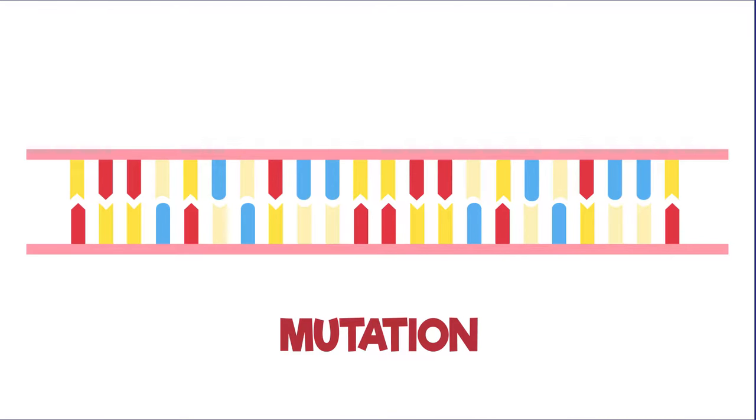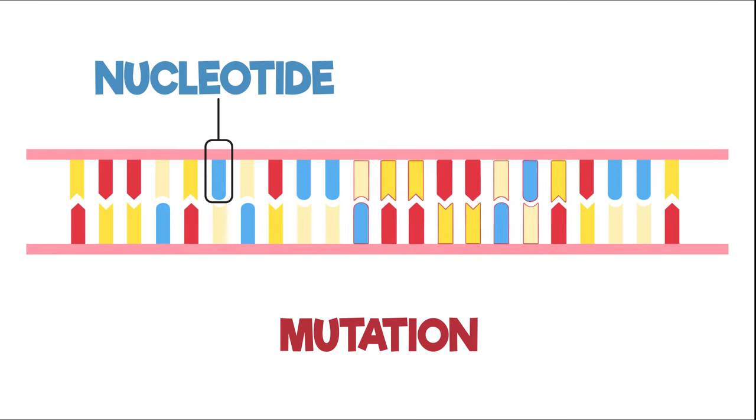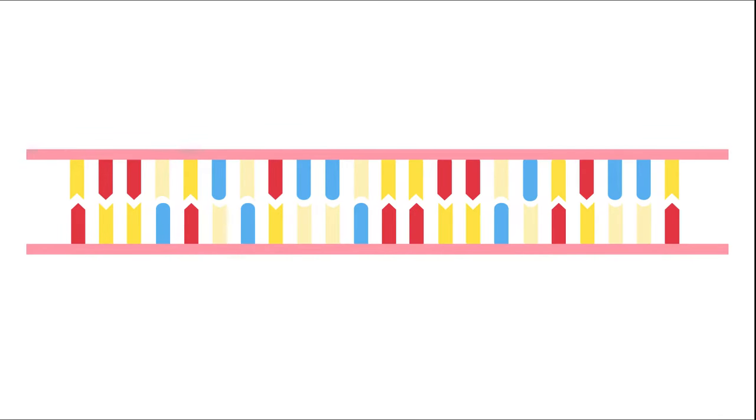A mutation is a change in DNA. It happens when one or more nucleotides are deleted, inserted, or substituted for a different nucleotide. This results in a change in the sequence of the nucleotide bases.